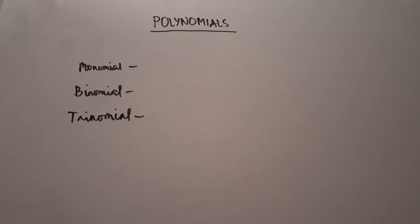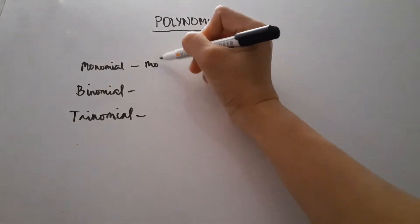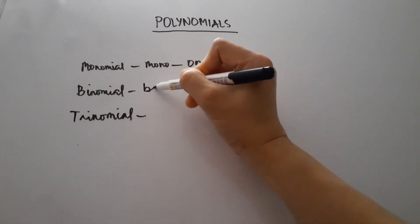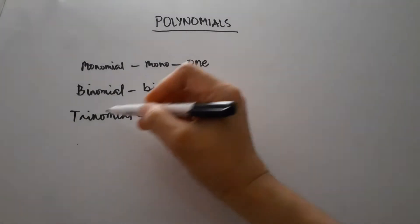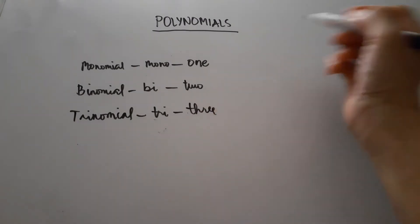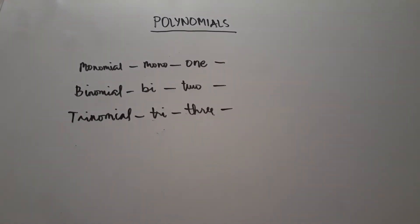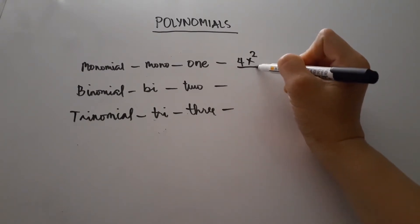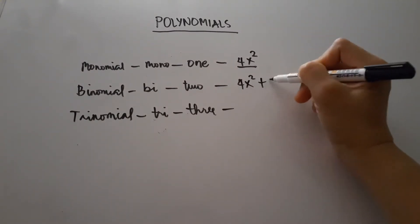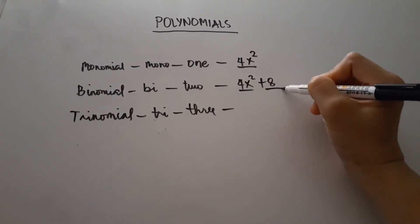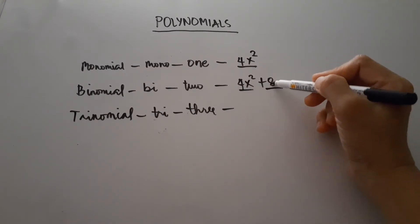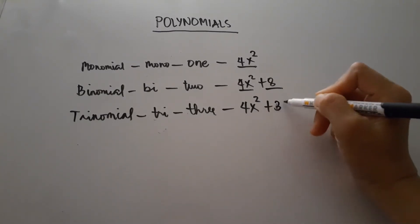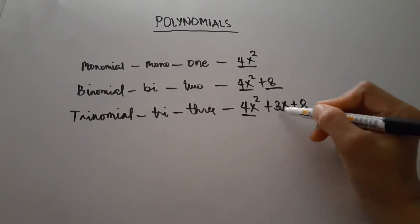We know that polynomials have many types: monomial, binomial, and trinomial. From the prefix mono, it means one; from bi, it means two; and from tri, it means three. A monomial has one term, for example 4x squared. A binomial has two terms, for example 4x squared plus 8. A trinomial has three terms, for example 4x squared plus 3x plus 8.